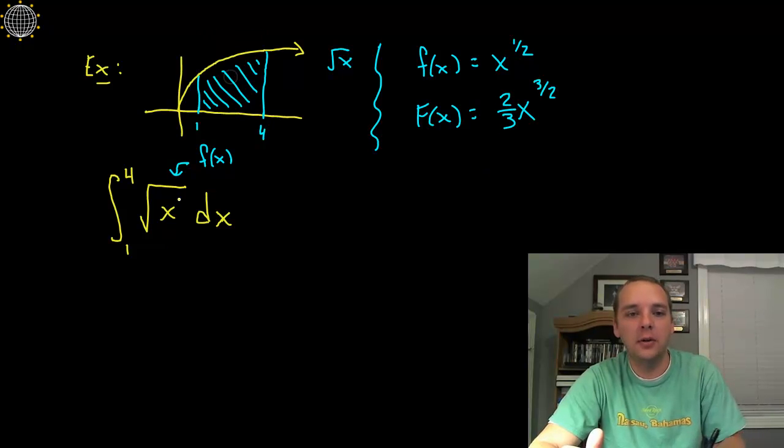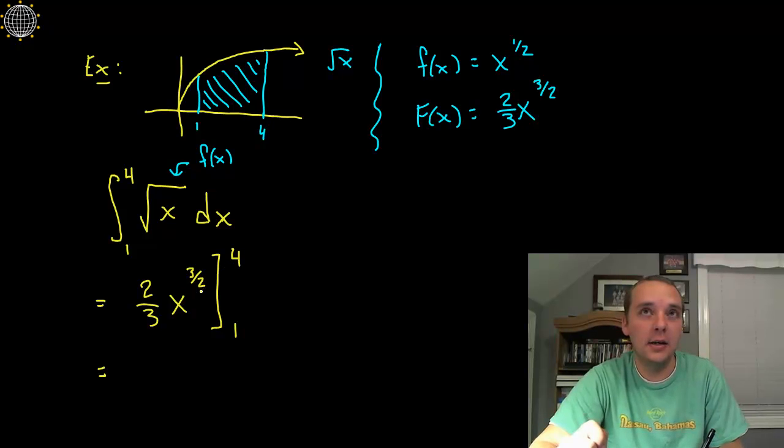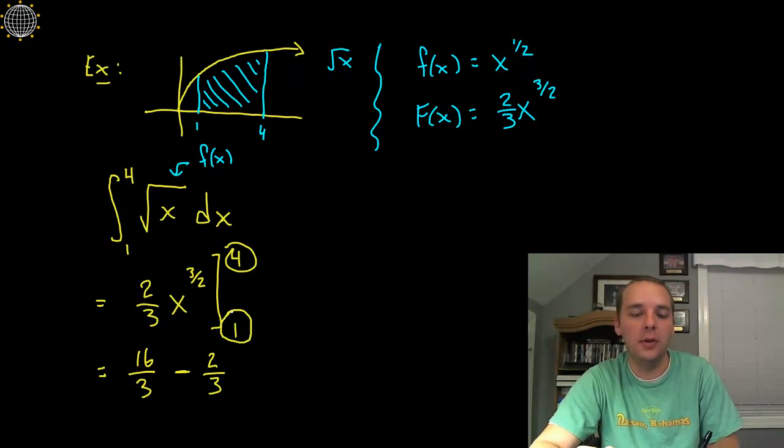So this integral here will be 2 thirds x to the 3 halves, bracket, right, with a 1 and a 4. And this means we're about to plug in 4, and we're about to plug in 1, and we're about to subtract those two quantities. So if you plug in 4, 4 to the 3 halves is 8, and then you have 8 times 2 is 16, so this would be 16 thirds. Then you plug in a 1, 1 to the 3 halves is 1, 1 times 2 thirds is 2 thirds, and we're going to subtract those. And make sure you do it in the correct order, first you plug in B, then you plug in A, and then you subtract.